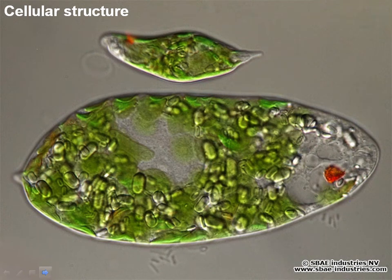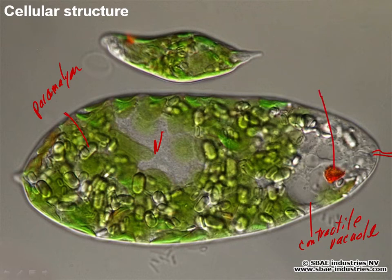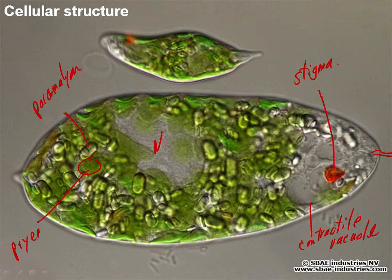Here it is in that beautiful diagram we saw at the beginning. The flagella are at the anterior end. The paramelon shows up very nicely here. This is the nucleus. Here's the contractile vacuole. This is the stigma. Lots of paramelon in there. Here's a pyrenoid. That's essentially what I see in this diagram.